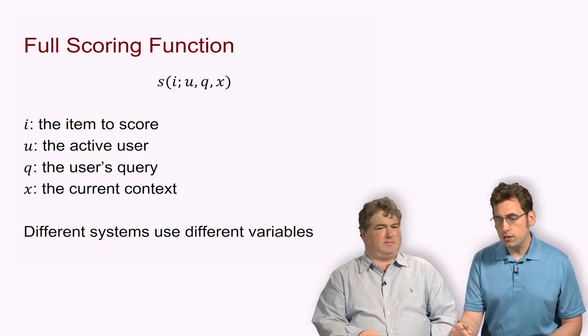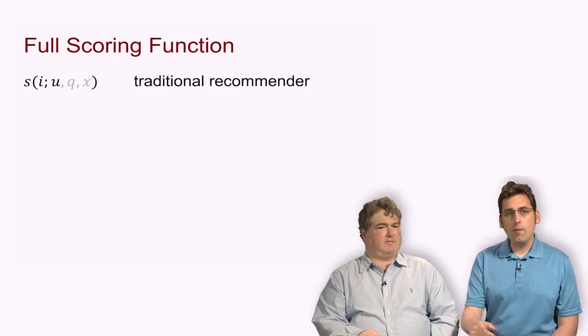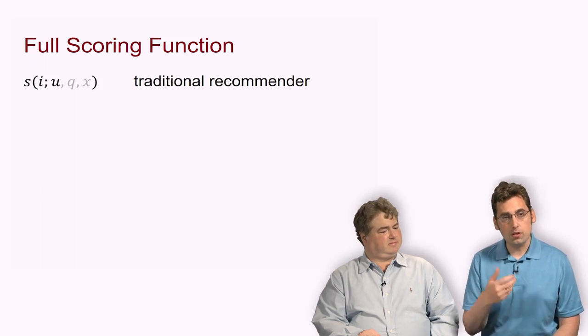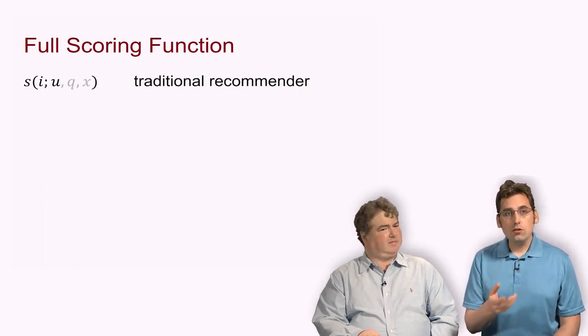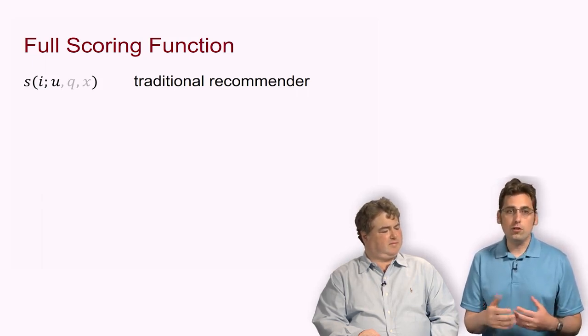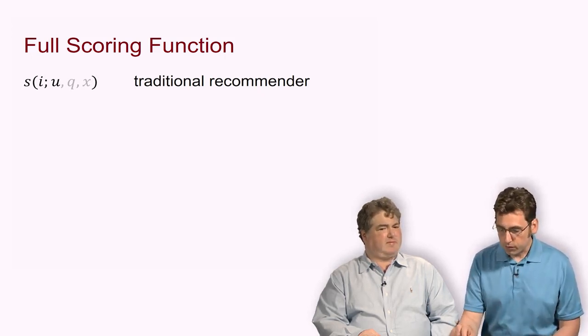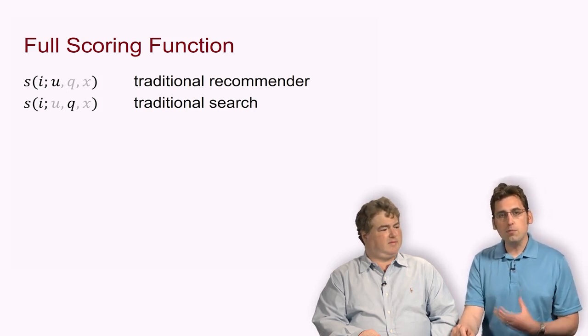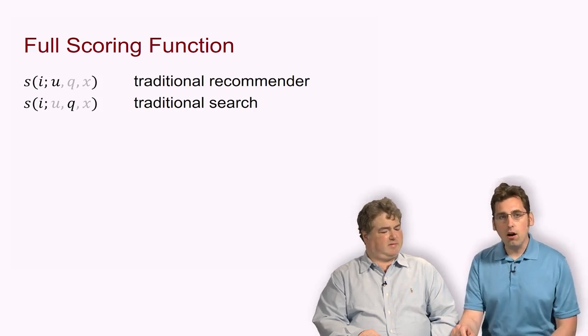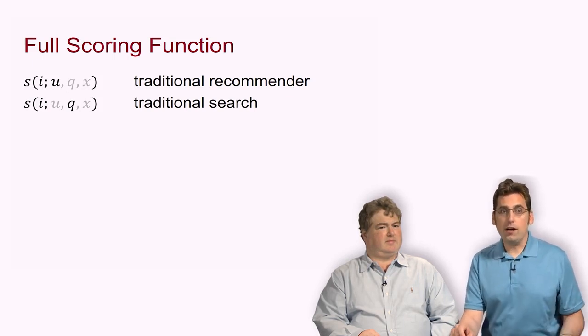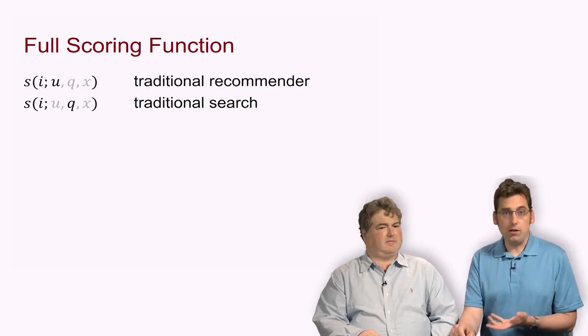Different systems are going to use different variables. A traditional recommender that just tries to suggest what items a particular user is going to want to buy or read is going to just depend on the user. A traditional search engine doesn't use the user or the context, but simply scores items based on how relevant they are to some kind of a query, for example, Java date formatting.